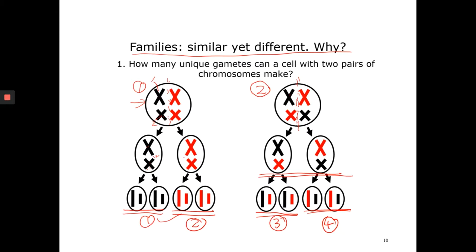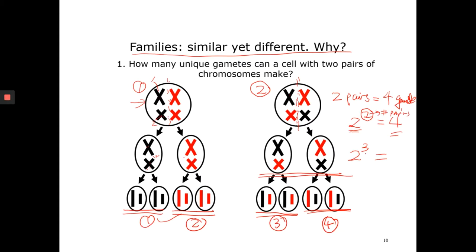With two homologous pairs, you end up with four unique gametes. The equation is 2 to the power of n, where n is the number of homologous pairs. If the cell has two pairs, meiosis generates 4 different gametes (2²=4). With three pairs, it's 2×2×2 = 8. With four pairs, 2×2×2×2 = 16.